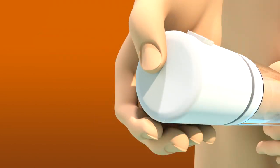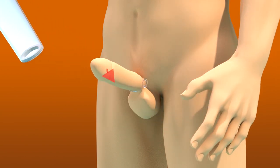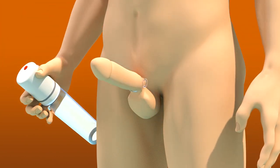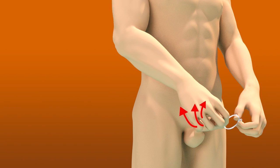Push the red release button to release vacuum. When finished, remove the tension ring.